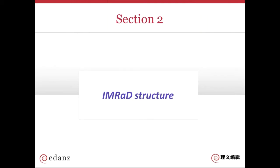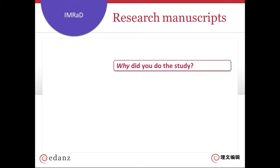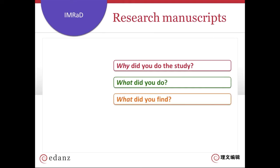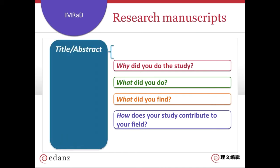This next section will be about the structure of a research manuscript. Your manuscript should answer four questions: why you did the study, what you did, what you found, and how you contribute to your field. These questions are answered in your abstract, which is a summary at the start of your paper, and they are also answered in full in each of the main sections of the text, which is usually in this order.